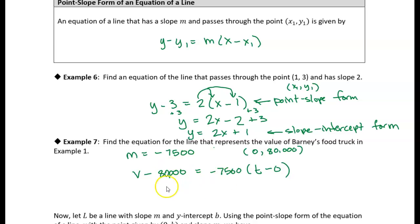So now I just need to rearrange this equation and solve for V. I want an expression for V. Now, actually, this is an equation for a line, so I could just stop here, but sometimes it's nicer to have an expression for the value. So if I just add 80,000 to both sides, then on this side, I have negative 7,500 T. I don't have to really worry about the zero, I can leave that off, and then I'm just adding 80,000 to both sides. So there's an equation for a line that represents the value of the food truck over time.